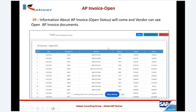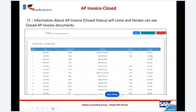The next information the vendor can see is their vendor invoice. When an invoice has been entered in the SAP system, that information can be seen in the portal as well — all open vendor invoices with the date, document number, reference, base number, amount, and balance. If an AP invoice has been closed, the vendor can see their closed AP invoice as well.